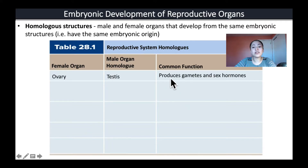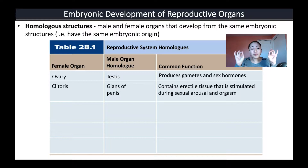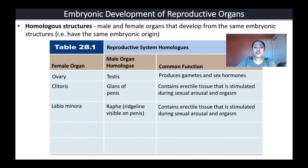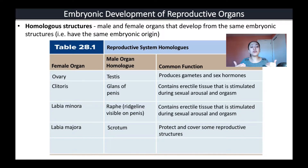Let's look at some of these homologous structures. In both males and females we have structures that produce gametes and sex hormones — in females these are the ovaries, in males these are the testes, and both develop from the same embryonic structure. Another example is the clitoris and the glans of the penis: both contain erectile tissue stimulated during sexual arousal and orgasm, and both develop from the same embryonic structures. The labia minora and the raphe — the ridgeline visible on the penis — also share a common embryonic origin and both contain erectile tissue.